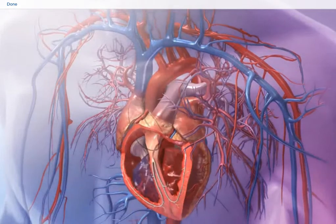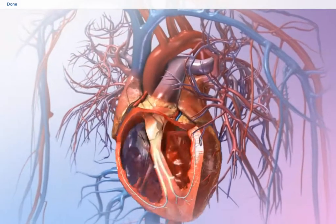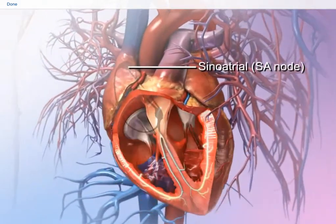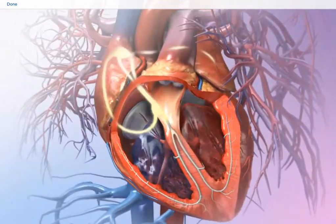The heart's conduction system regulates the electrical impulses that make the heart beat. An impulse begins in a bundle of nerve tissue called the sinoatrial or SA node. The impulse makes the atria contract and blood empties into the ventricles.